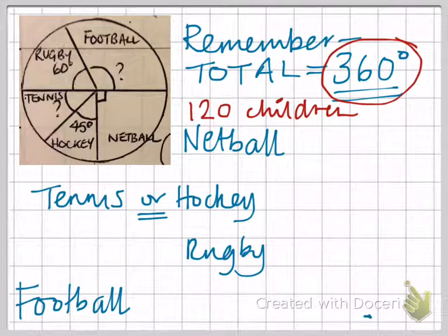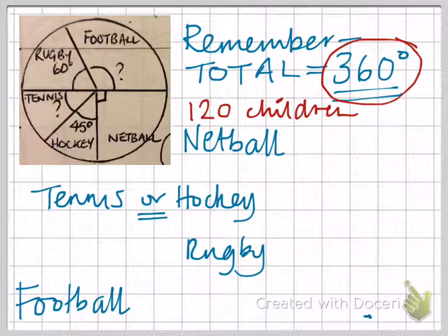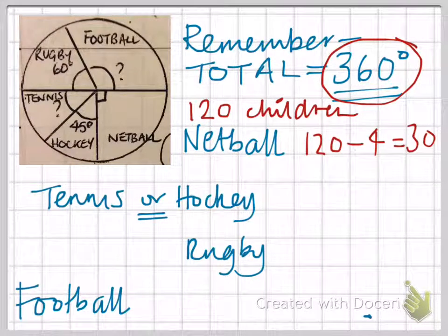So if we're working out how many children do netball, we can see that it's a right angle. A right angle is a quarter, so a quarter of 120 — 120 divided by 4 — would give us 30 children.